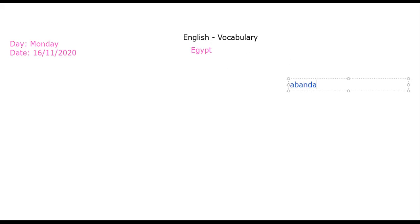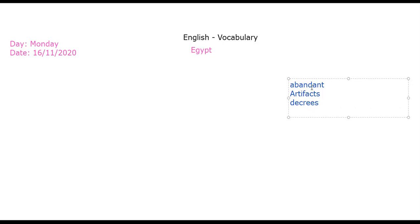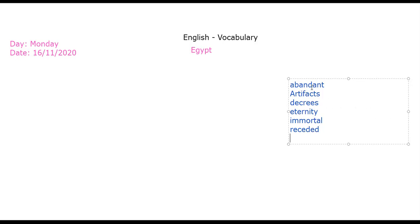The first word we have is 'abundant,' then we have 'artifacts,' then we have 'decree,' and then 'eternity,' then 'immortal,' then 'receded,' and then 'reigned.' The G in 'reigned' is silent. These are the vocabulary words for today.